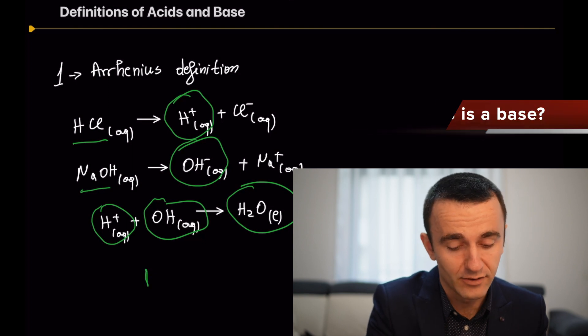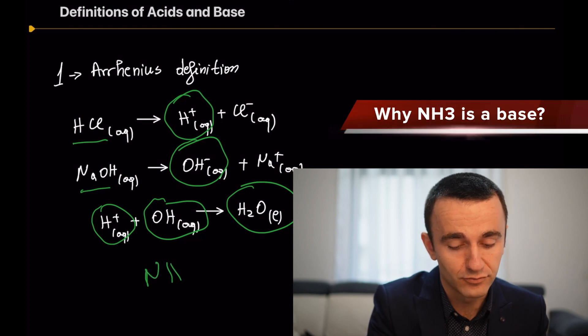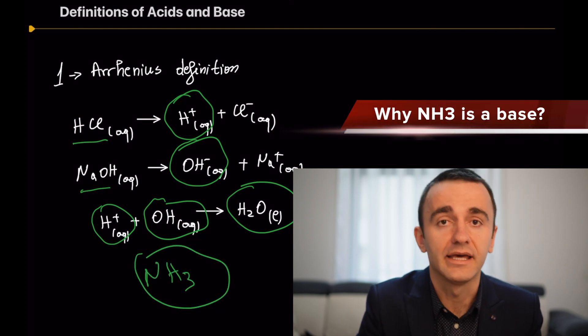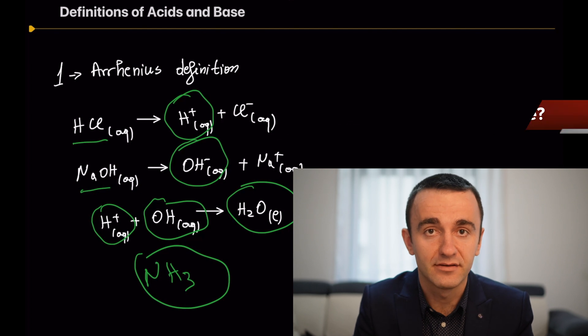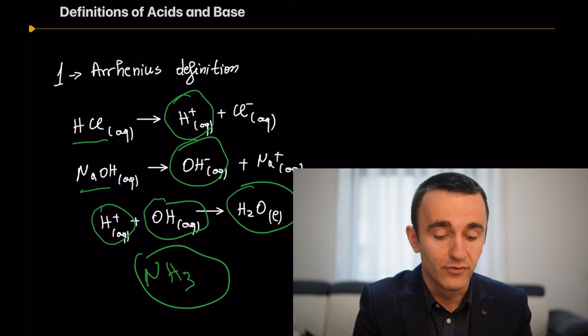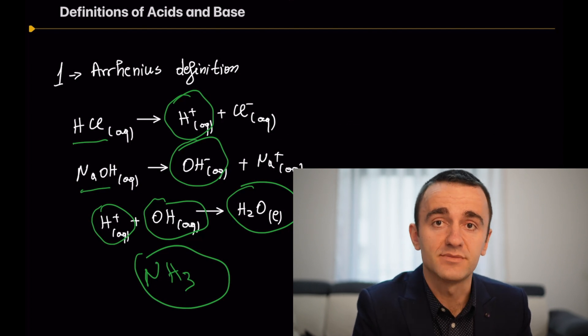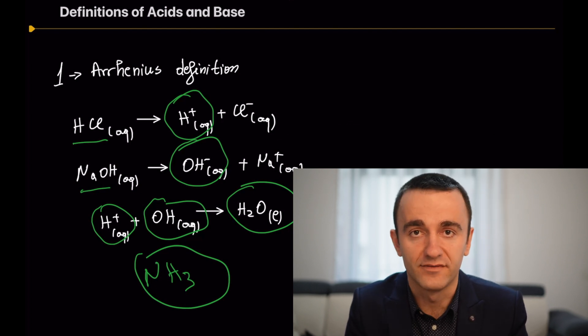But the Arrhenius definition was not capable of explaining why ammonia is a base. For this reason, let's move to the second definition.